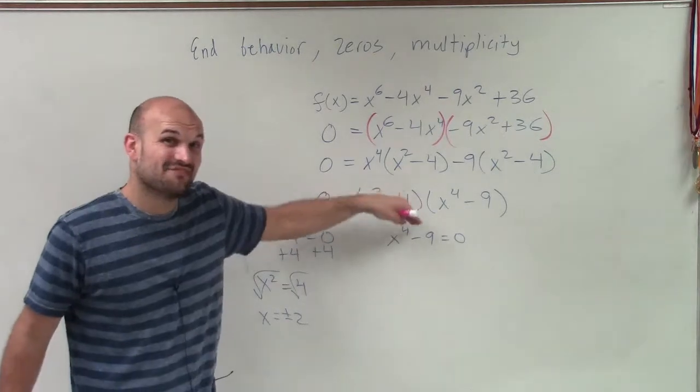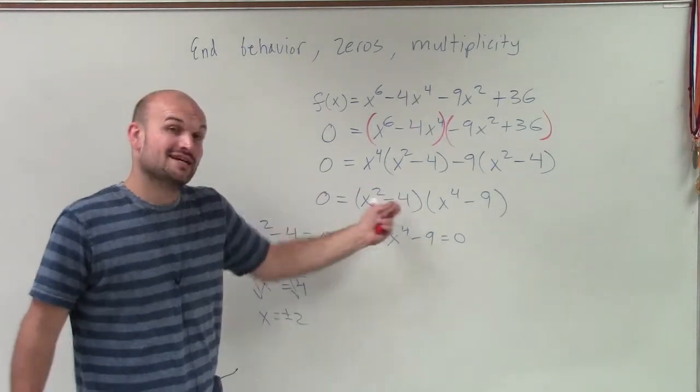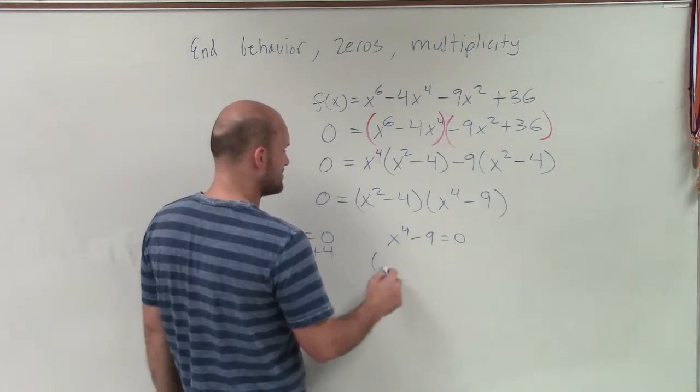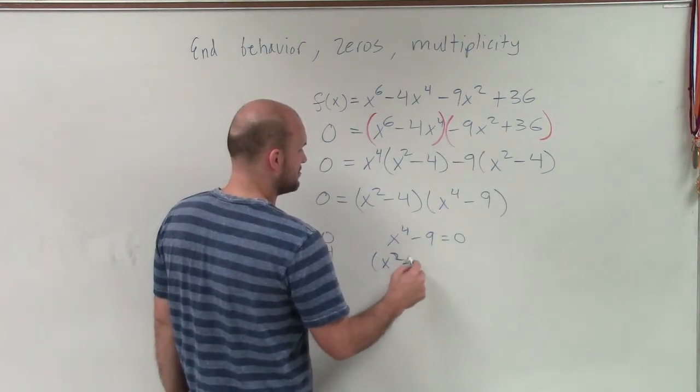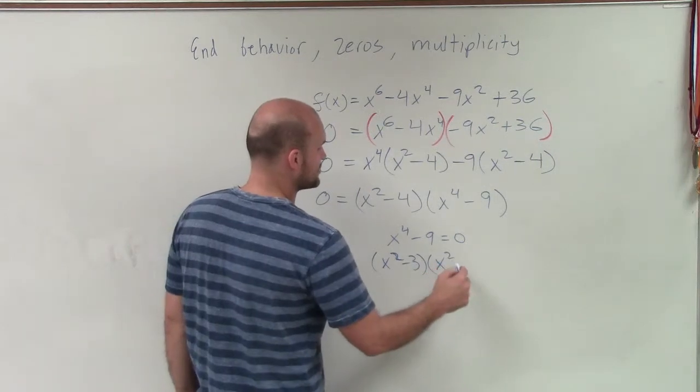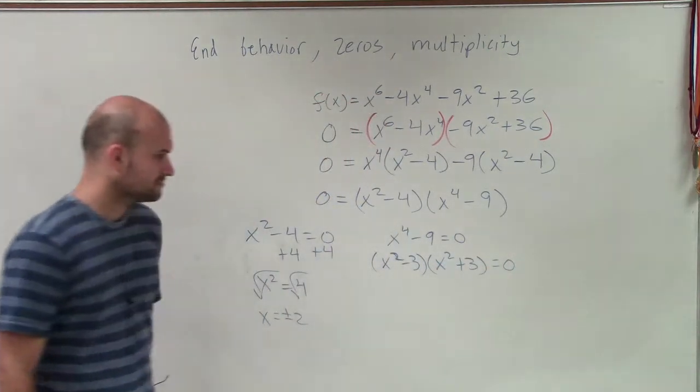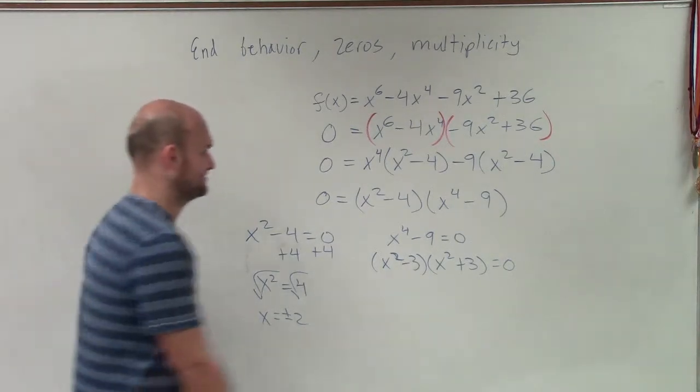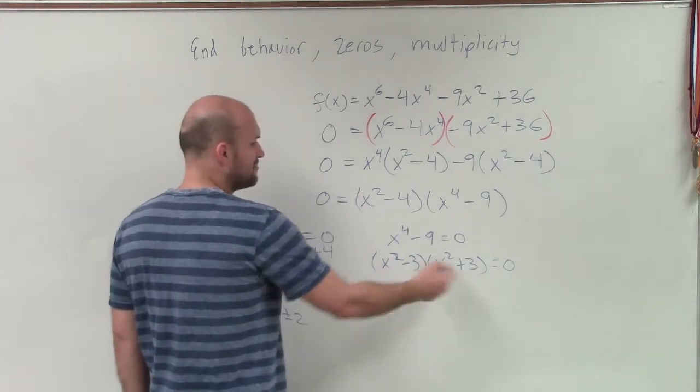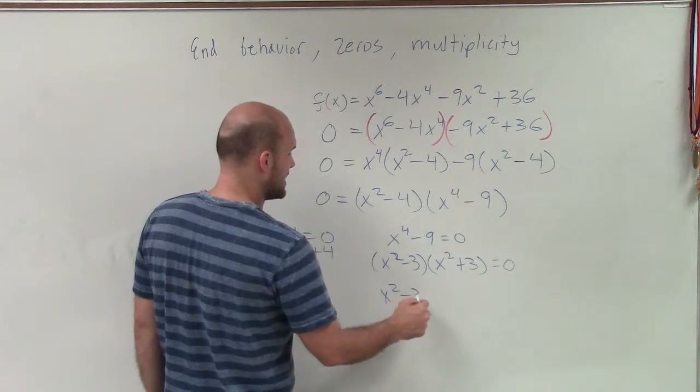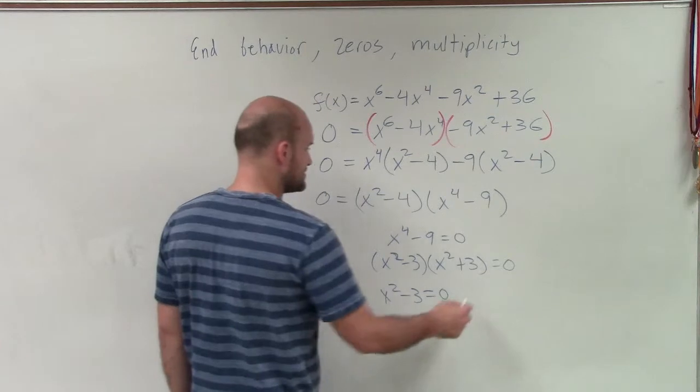Here, this is a difference of two squares. I could take the fourth root and see what it's going to determine, but when I look at this, if I factor this out, I can break this up into (x² - 3)(x² + 3) = 0. Because if I multiply this all out, I'm going to get x⁴ - 9. Now I can apply zero product property again, and I get x² - 3 = 0 and x² + 3 = 0.